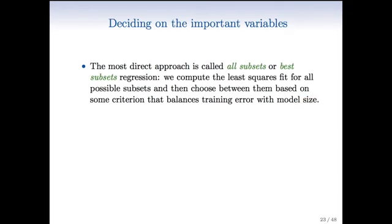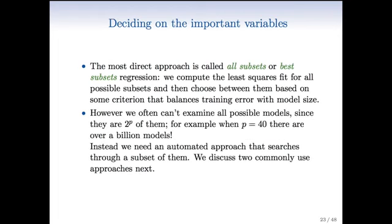So, the most direct approach is called all subsets or best subsets regression. So basically what you're going to do is you're going to compute the least squares fit for all the possible subsets of the variables and then choose between them based on some criterion that balances the training error with the model size. Now this might seem like a reasonable thing to do if you have a small number of variables, but it gets really hard when the number of variables gets large. So if you've got p variables, there's 2 to the p subsets and that 2 to the p grows exponentially with the number of variables. So for example, when p is 40, there are over a billion models.